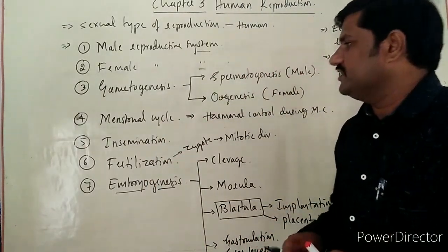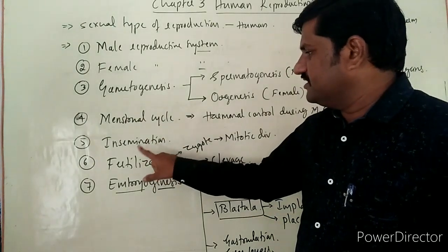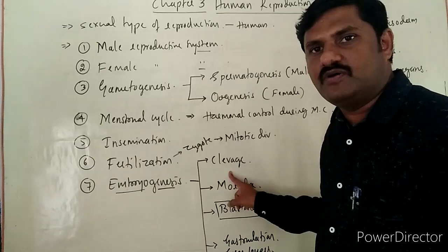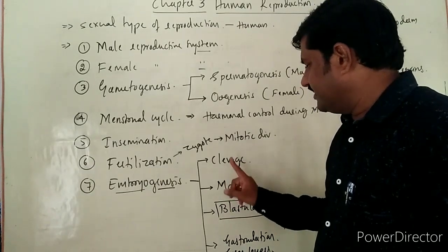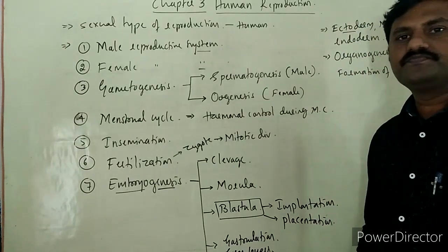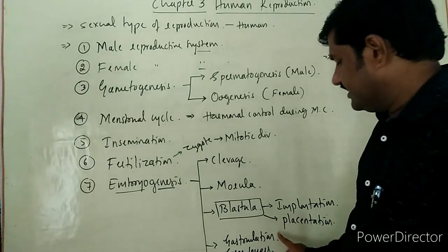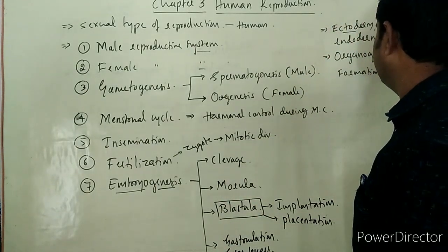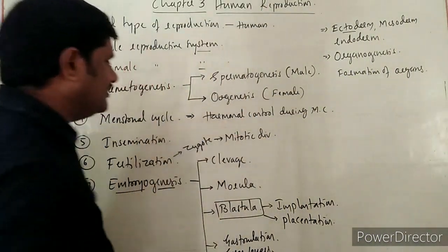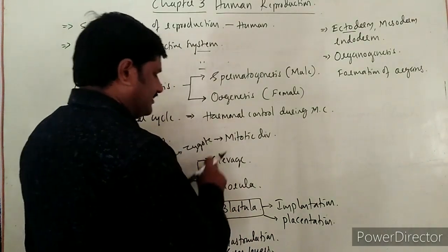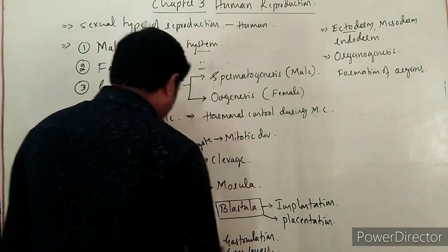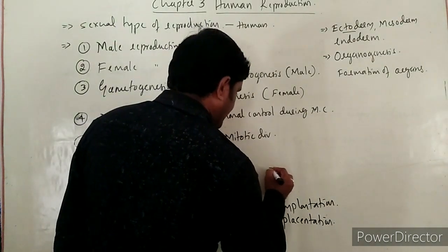To summarize the events during human reproduction: insemination occurs first, then fertilization leads to zygote formation. The zygote undergoes continuous mitotic division — cleavage — and morula formation takes place, followed by blastula formation. The blastula undergoes implantation, which leads to formation of the placenta. After placentation, gastrulation occurs, germ layers are formed, and that leads to organogenesis. These developmental stages confirm pregnancy.